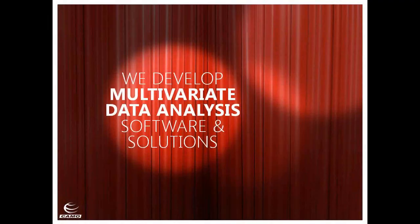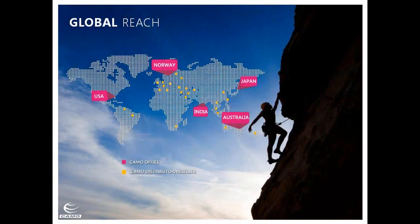CAMO is a company that makes multivariate data analysis software and solutions. We were founded in Trondheim, Norway, 26 years ago, and are now headquartered in Oslo, Norway. We are a global company with offices in Woodbridge, New Jersey, Tokyo, Japan, Australia, and Bangalore, India, which is also the home of our development center. We also have global distributors and resellers to serve our global needs.